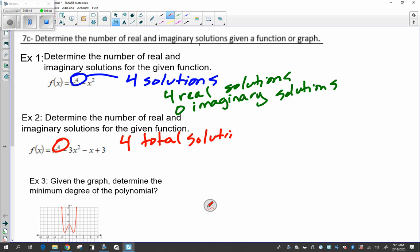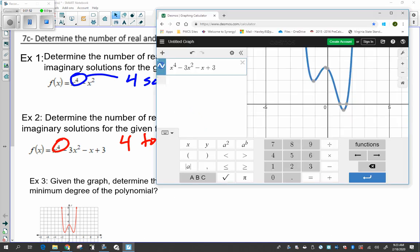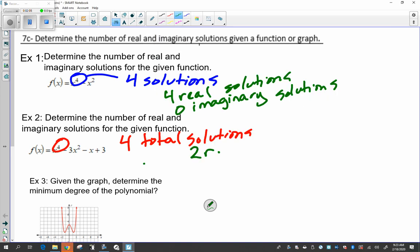And now we have to look at what type of solutions they are. So if we look at the graph, and it looks like it touches the graph or goes through the x-axis, intercepts it twice, so that means there's two real solutions. And if you just want to do a quick subtraction, 4 total minus the 2, that must mean there's two imaginary solutions.